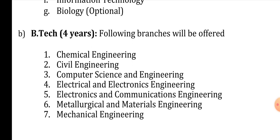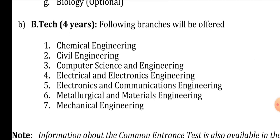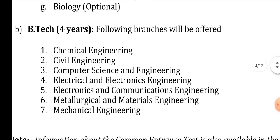For those with Triple IT, here are all the branches available now: Chemical Engineering, Civil Engineering, Computer Science Engineering (CSE), Electrical and Electronics Engineering (EEE), Electronics and Communication Engineering (ECE), Metallurgical and Materials Engineering (MME), and Mechanical Engineering. These 7 branches are available in AP IIITs, and similarly, these 7 branches will also be available in TS IIITs.